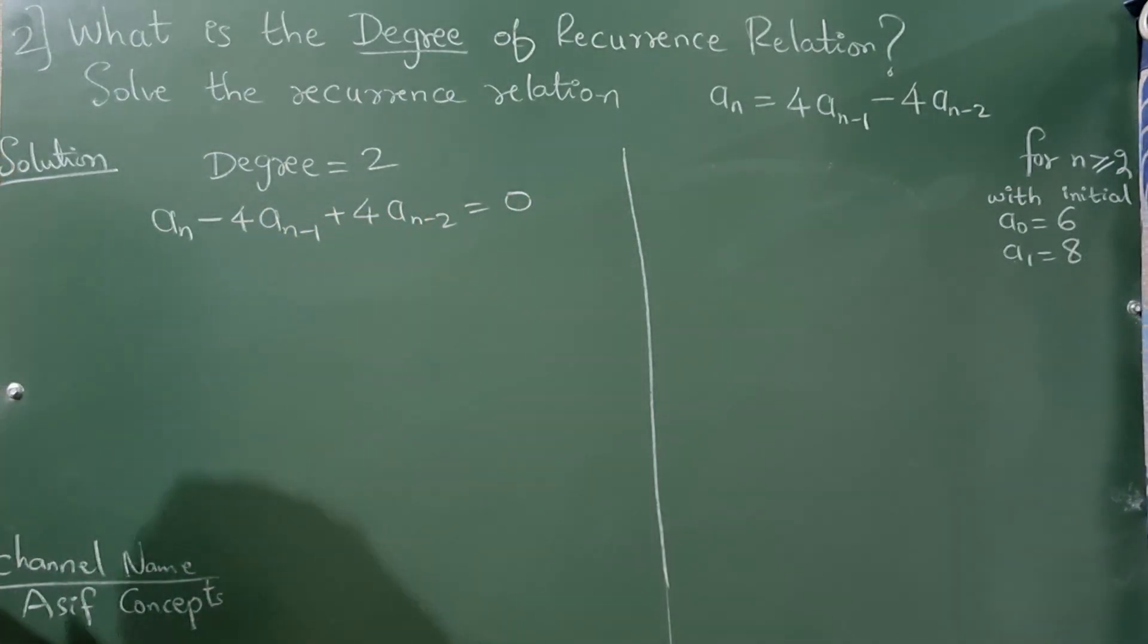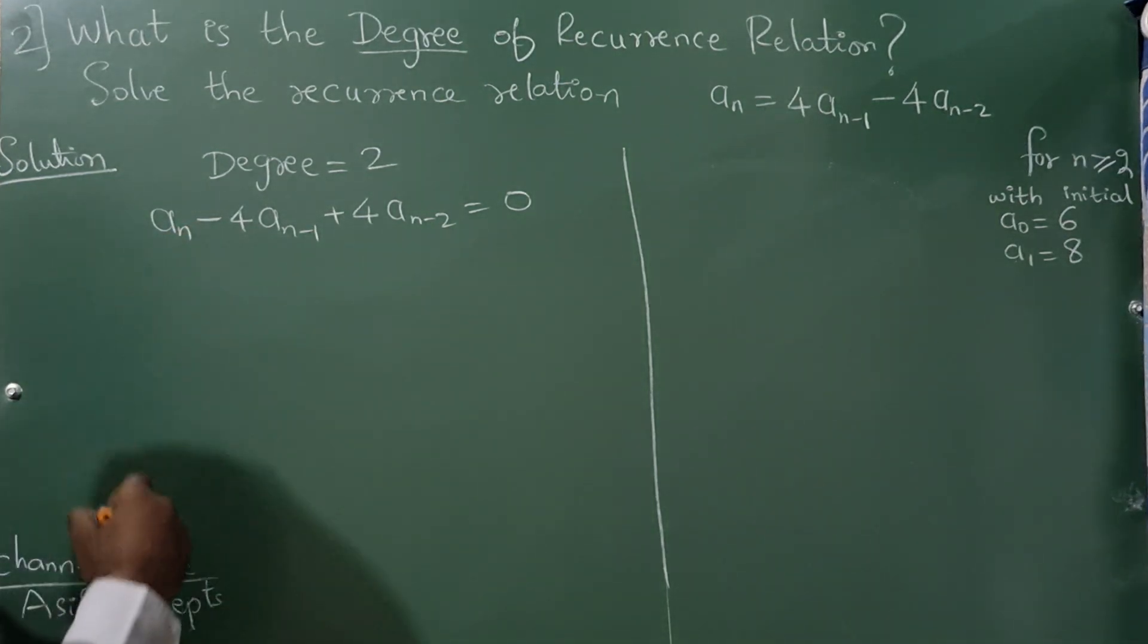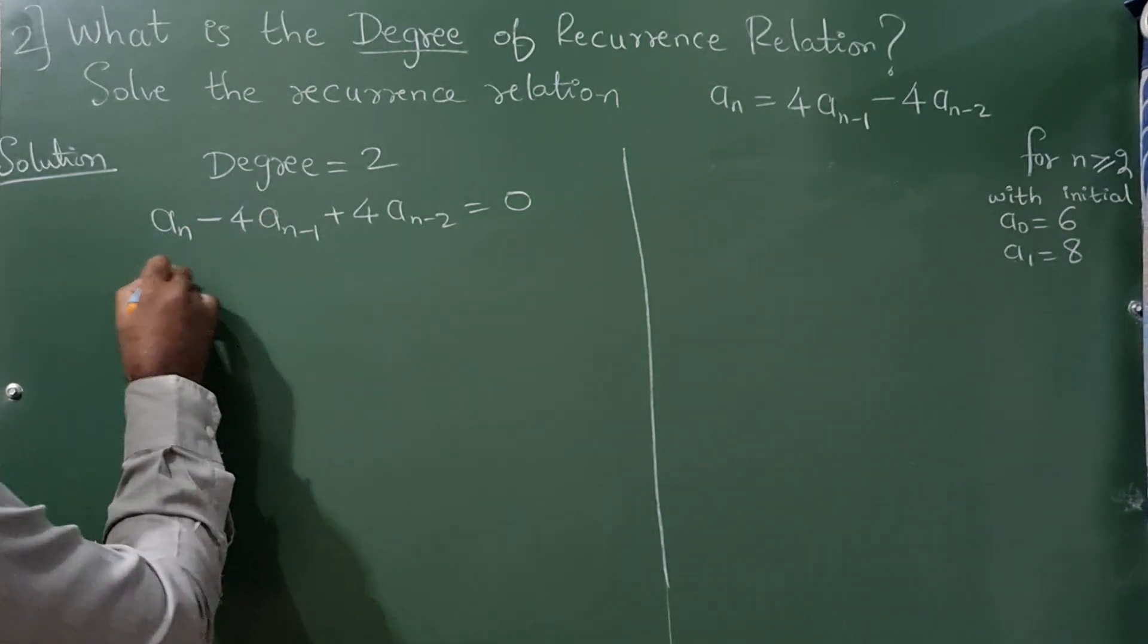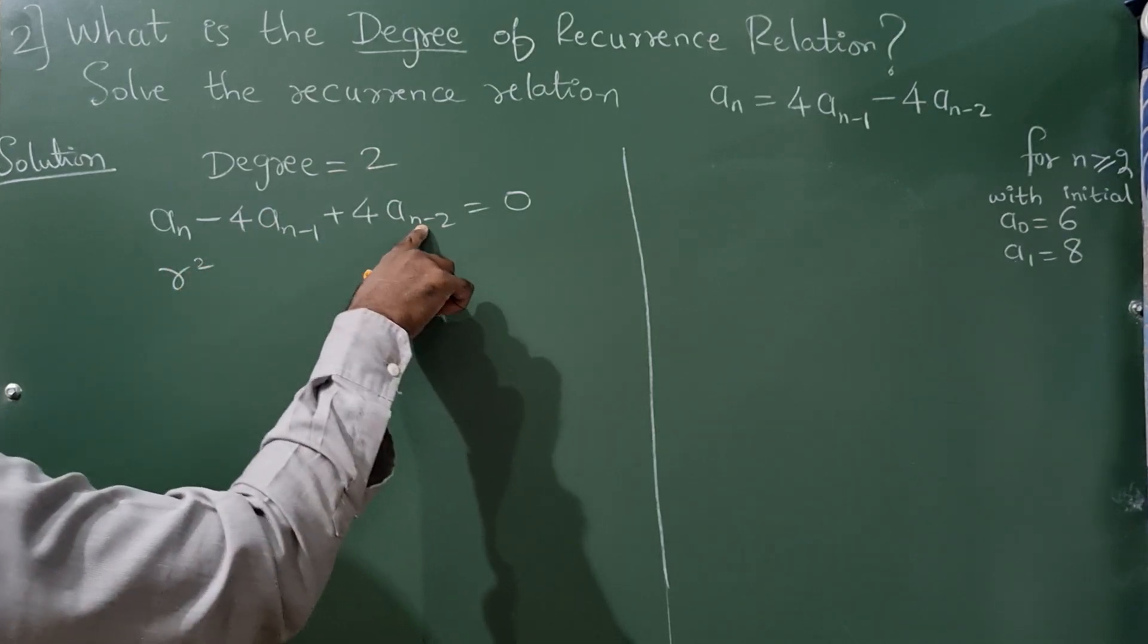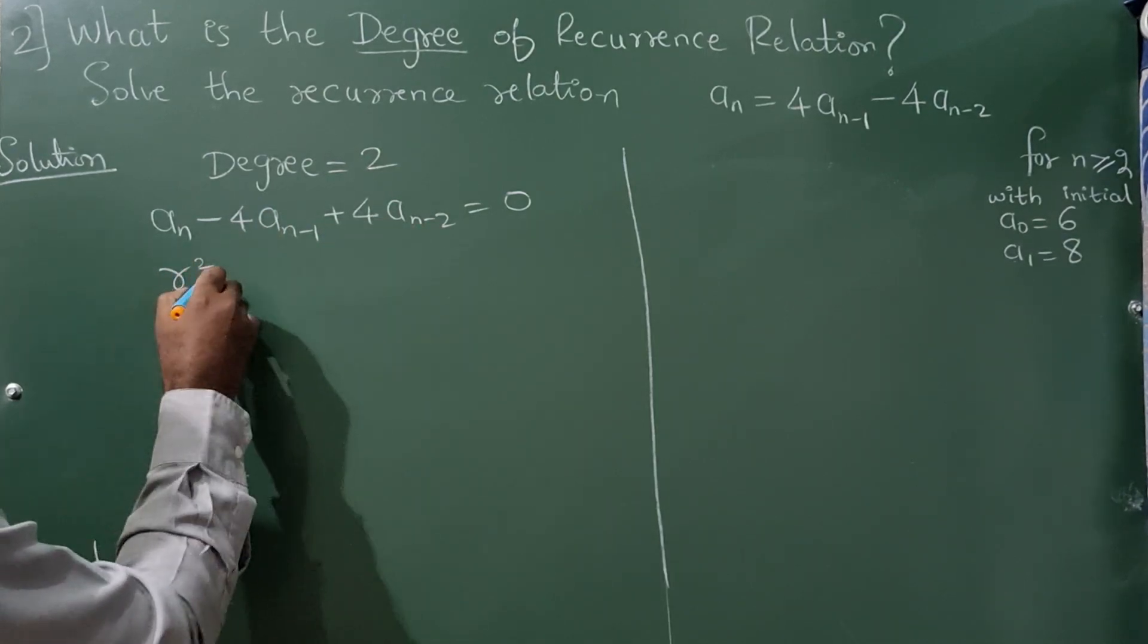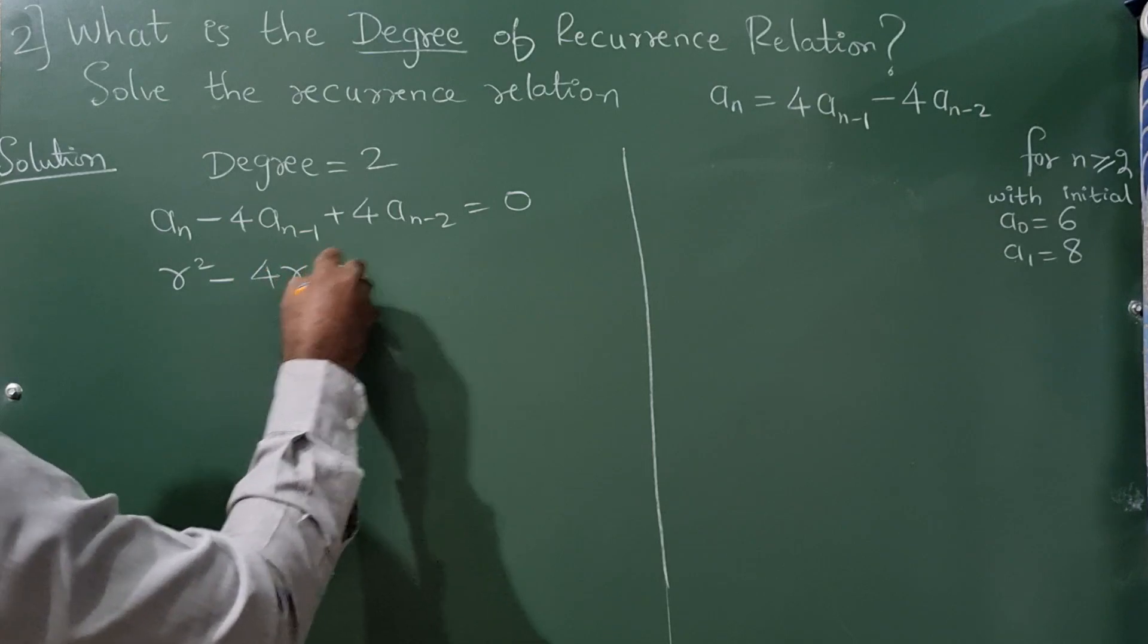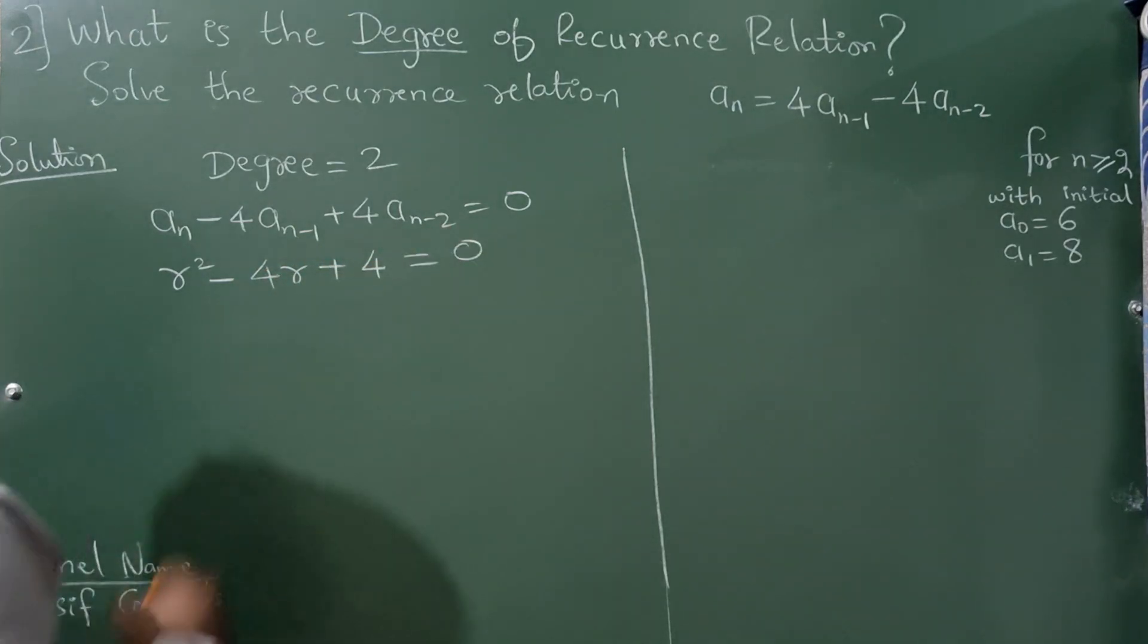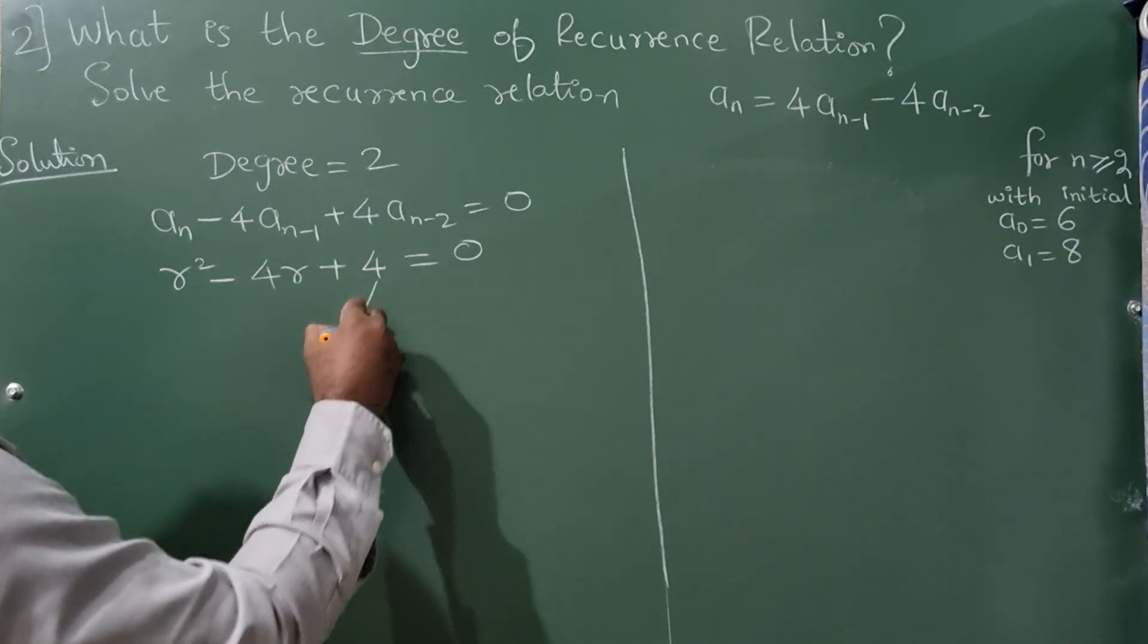Now characteristics equation we need to find. Since the degree is 2 because of n-2, I am writing r² - 4r + 4 = 0.